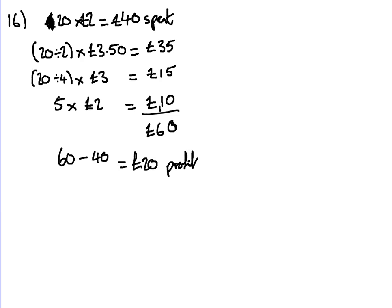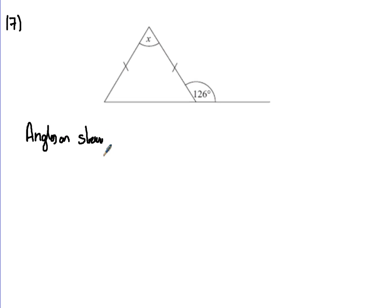On to question 17. We've got a bit of work here — work out the size of angle marked X and give reasons for your answer. First step: we're looking at angles on a straight line, because they equal 180 degrees. I'd like to write down each time what we've done, so: angles on a straight line equal 180 degrees.